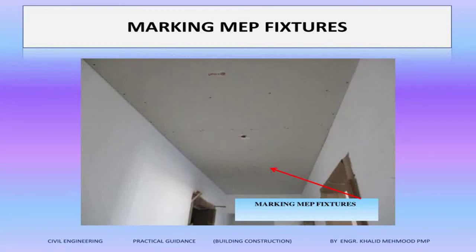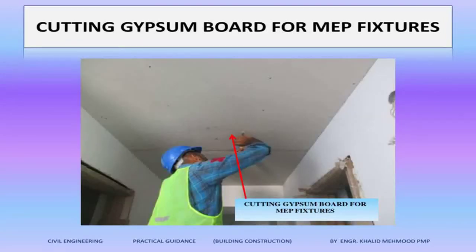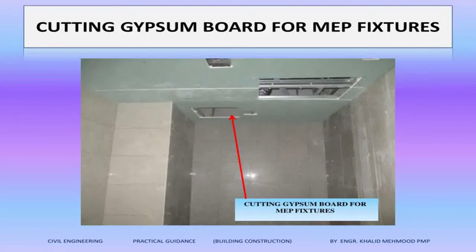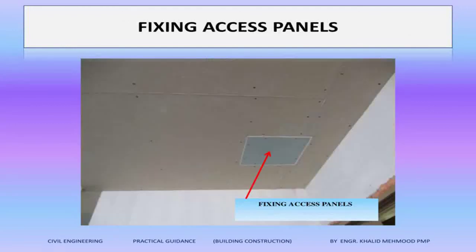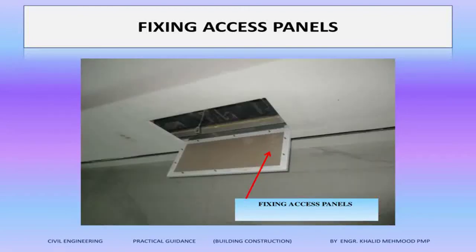After we have fixed the gypsum board, we will start marking for the MEP fixtures, because we have a lot of MEP fixtures. After doing the marking, we will start cutting the gypsum board for MEP fixtures, because the MEP fixtures are already fixed above the gypsum board. Here you can see we have cut the gypsum board. This is called an access panel — to do any maintenance above the gypsum board false ceiling, we need some access, so this is the access panel.